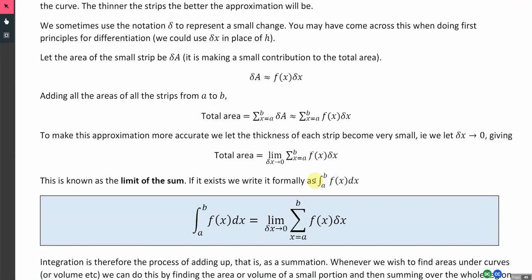If we add all the areas of all the strips between our two limits, then the total area, which will be the sum of all the individual areas between the x value at the left and the x value at the far right, will be approximately equal to, if we now replace delta a with f(x) times delta x that we worked out a moment ago. That is an approximation for the total area.